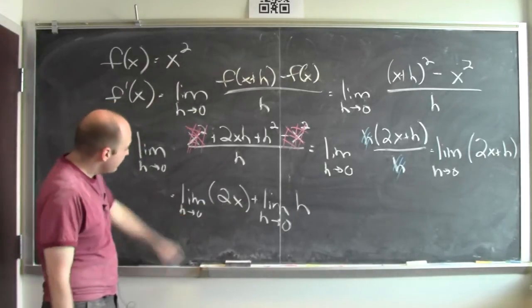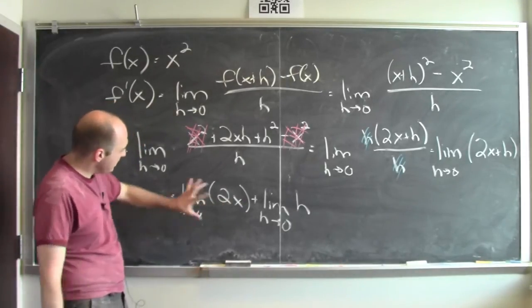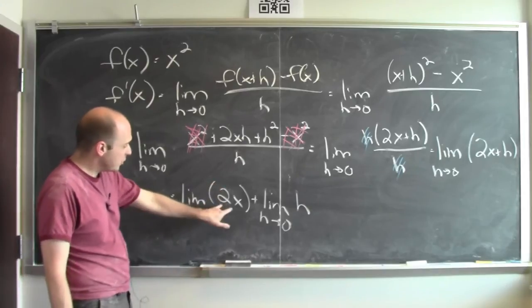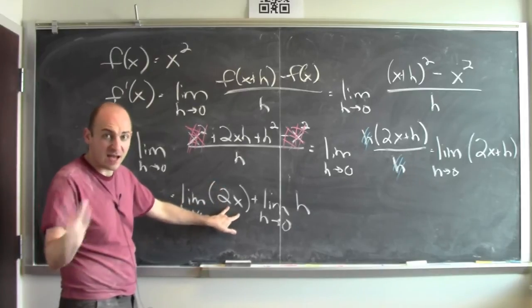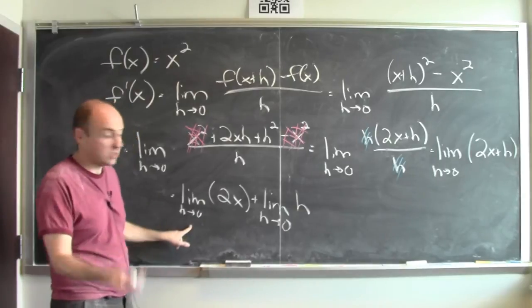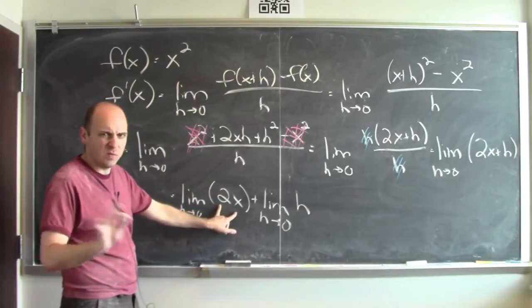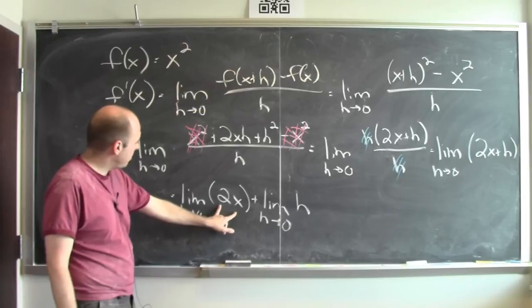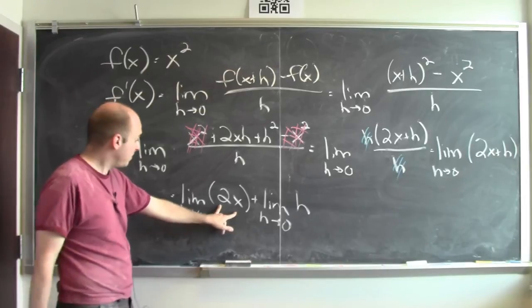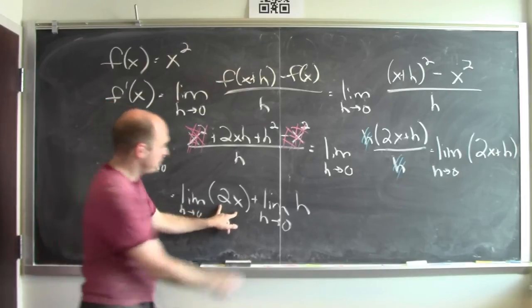The limit of 2x as h goes to 0, this is the limit of a constant. 2x doesn't have any h's in it. It's constant as far as h is concerned. H is the thing that's moving here and 2x isn't moving when h is moving. So this is just 2x. It's the limit of something that's not changing. So this is 2x.